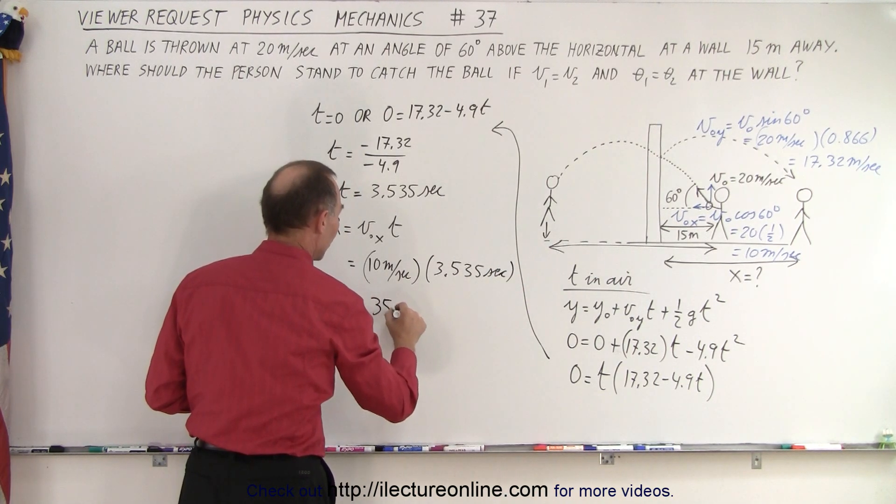And then all we have to do is figure out the range, the total range from here to here. So this would be the range. The range is equal to the initial velocity in the x direction times time. So in this case, that would be 10 meters per second times 3.535 seconds, which means it's 35.35 meters.